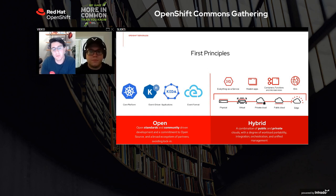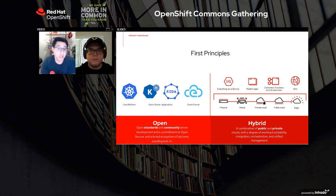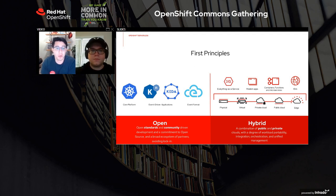On the right side, you have the hybrid aspect, which is really key for everything we're doing — making sure that the experience we deliver for those projects as products has a great experience on public and on private cloud, and works really well anywhere you want to run OpenShift.